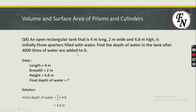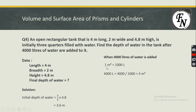When 4000 liters of water is added, the length and breadth of the water remain the same — only the height increases. First, convert 4000 liters to cubic meters: since 1 cubic meter = 1000 liters, and we are going from a smaller unit to a larger unit, we divide. 4000 ÷ 1000 = 4 cubic meters.